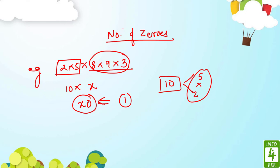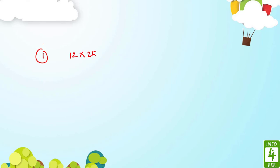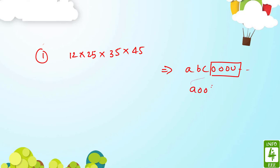A zero comes from 10, and 10 comes from a pair of 2 and 5. So to calculate the number of zeros, you need to calculate the number of pairs of 2 and 5 — each pair makes one zero. The question asks for the number of zeros at the end, which is the maximum power of 10 in the expression. So just focus on pairs of 2 and 5.